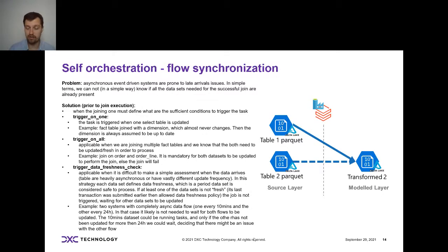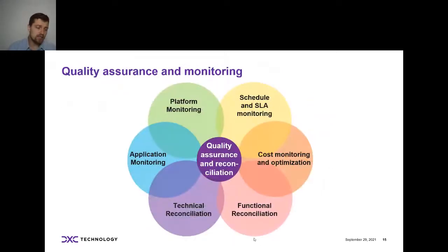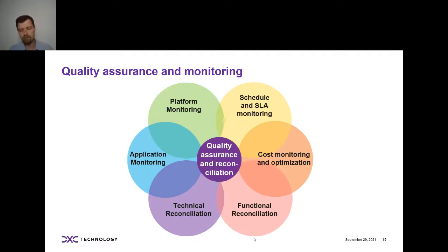I know this is pretty complex — if you have any questions, write them in the chat now, or feel free to write to me afterwards; I'll have my contact details posted. All right, next topic: quality assurance. How do you actually make sure the system is working correctly? People normally only think of platform monitoring — looking at components — and application monitoring — looking at exceptions where jobs fail. But actually there's way more than you have to do to have a stable analytics platform.